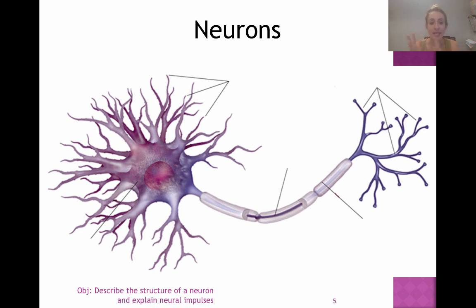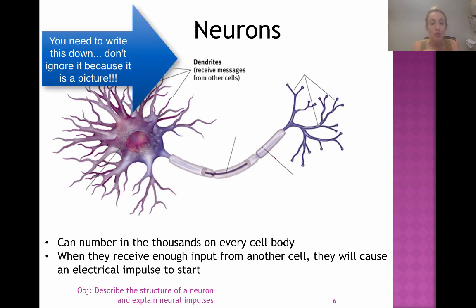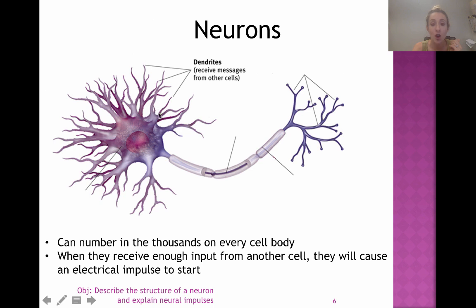Now I'm going to talk about all the different parts of the neuron. For each part, write down the name and definition. The first thing are dendrites — those little branch-looking things on the side. What they do is listen: they receive messages from other cells. They wait for a message from the previous cell, and there can be thousands of dendrites on every cell body. The cell body contains the nucleus. The dendrites are what start the electrical impulse — when they receive enough messages from the previous cell.